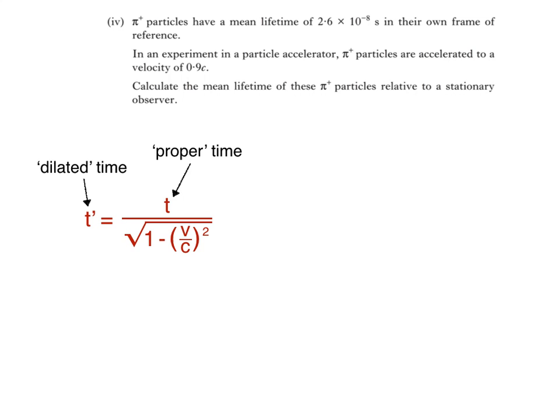Substituting into our equation, we get 2.6 times 10 to the negative 8 divided by the square root of 1 minus 0.9 squared, which works out to be 5.96 times 10 to the negative 8 seconds. Or using the correct number of significant figures, 6.0 times 10 to the negative 8 seconds.